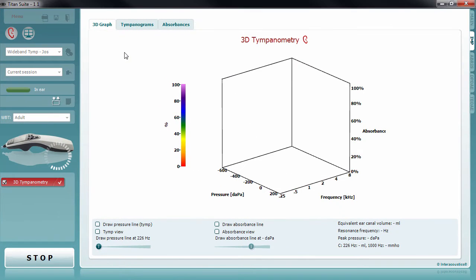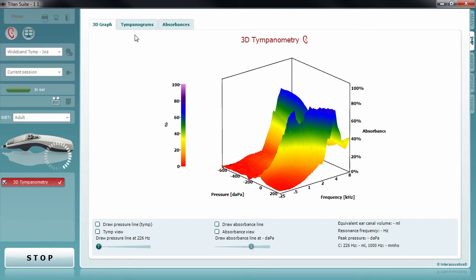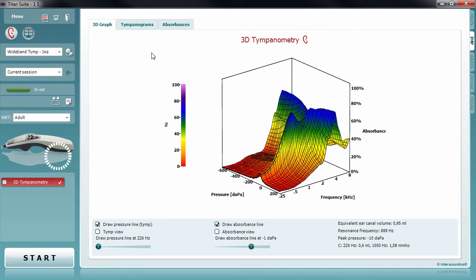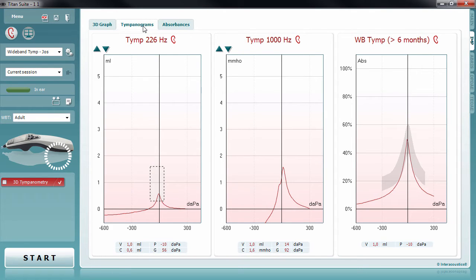Wideband tympanometry displays all the data obtained from the measurement on the 3D graph. However, in order to interpret the results from this measurement, it is recommended to look at the tympanograms and absorbance graphs separately. The purpose of the tympanograms tab is to display the most relevant tympanograms to the clinician so that an interpretation of the middle ear status can be made.